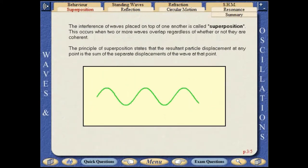The interference of waves placed on top of one another is called superposition. It occurs when two or more waves overlap, regardless of whether or not they are coherent. The principle of superposition states that the resultant particle displacement at any point is the sum of the separate displacements of the wave at that point.